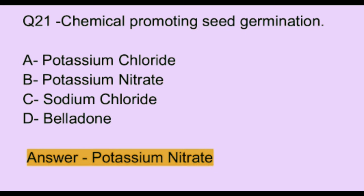Question number 21. Chemical producing seed germination: Option A: potassium chloride. Option B: potassium nitrate. Option C: sodium chloride. Option D: belladone. The correct answer is option B, which is potassium nitrate.